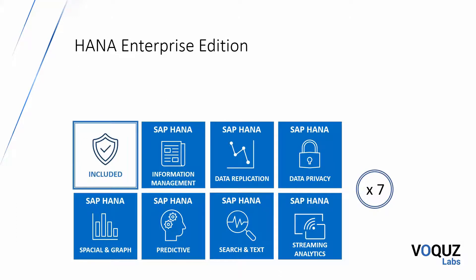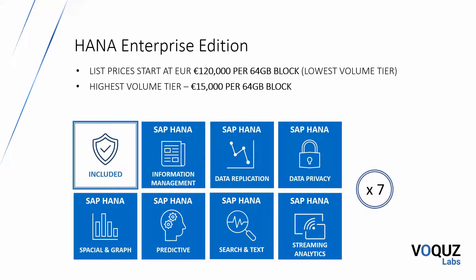The HANA Enterprise Edition includes the main advanced HANA features available on the price list and is as a result more expensive. Prices currently start at €120,000 per 64 gigabyte block, with prices reducing to €15,000 per block in the highest volume tier.